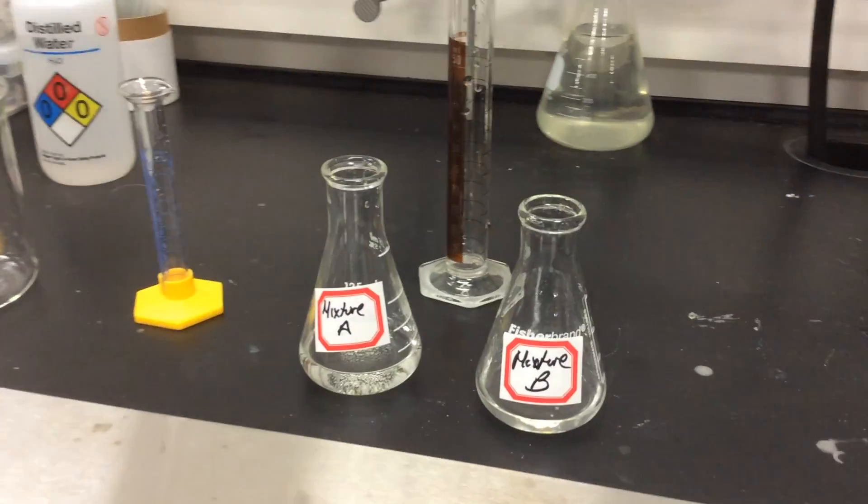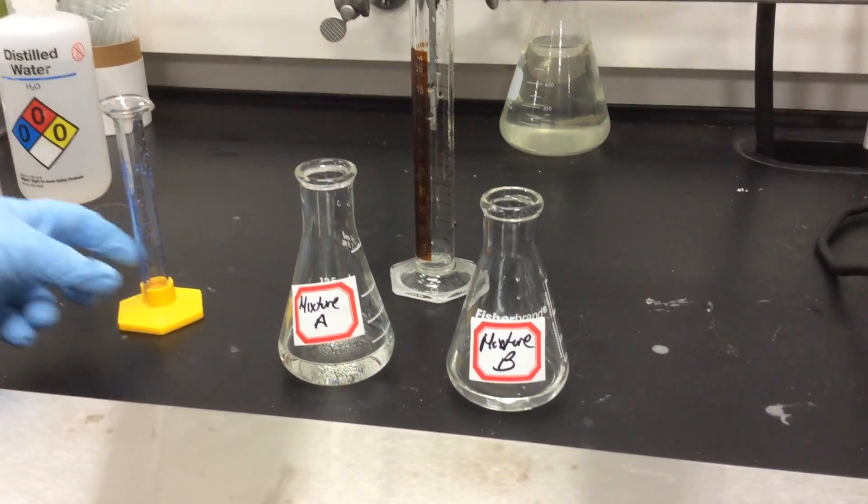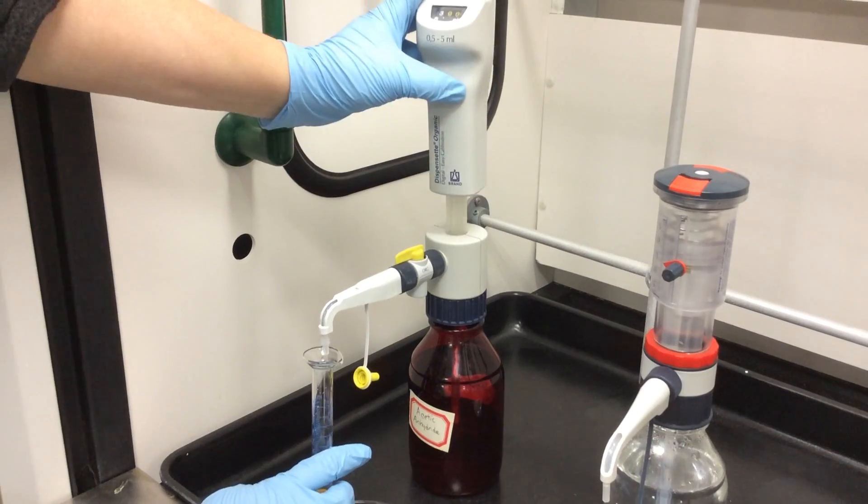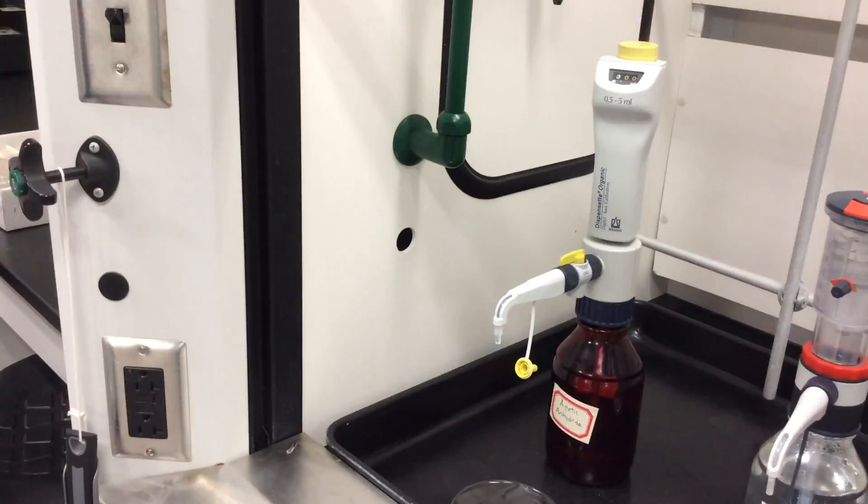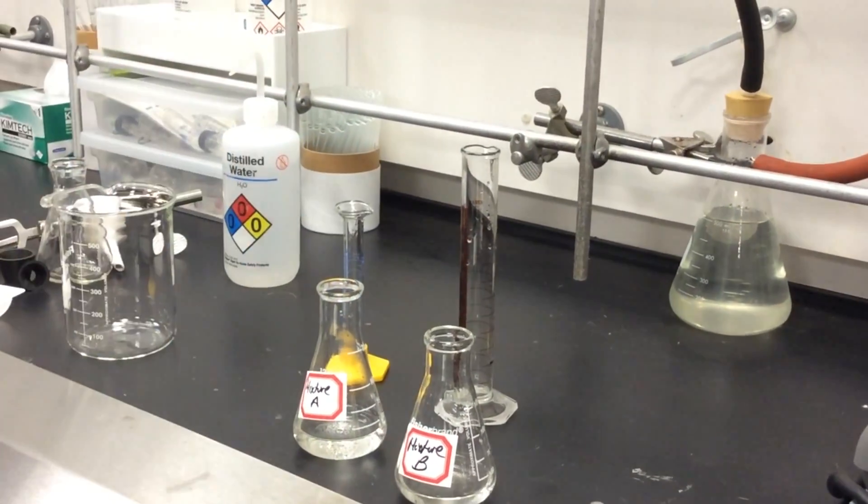We're going to now go back over to our dispensing hood, and once we're at our dispensing hood, we're now going to add 3 milliliters of acetic anhydride using the pump the same way we did before and come back and pour it into our mixture B flask.